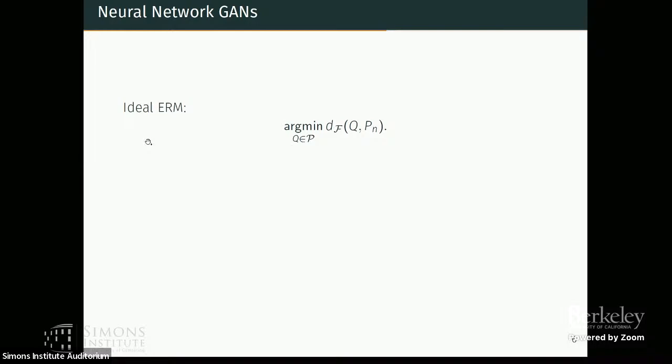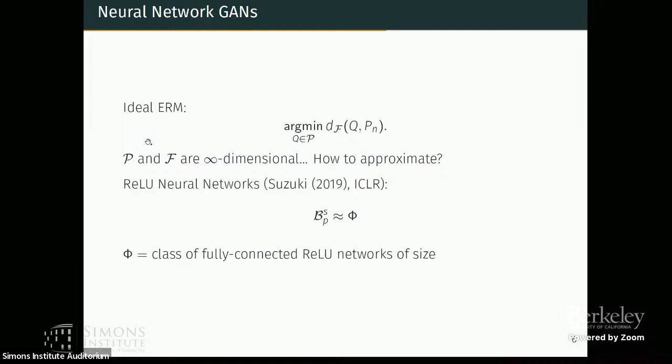So now if I wanted to estimate a distribution that lived in some Besov space under a particular Besov IPM, ideally what I would want to do is optimize this ideal empirical risk over the set of Besov distributions over this Besov IPM. But again, these two spaces are infinite dimensional and I can't really do this optimization.